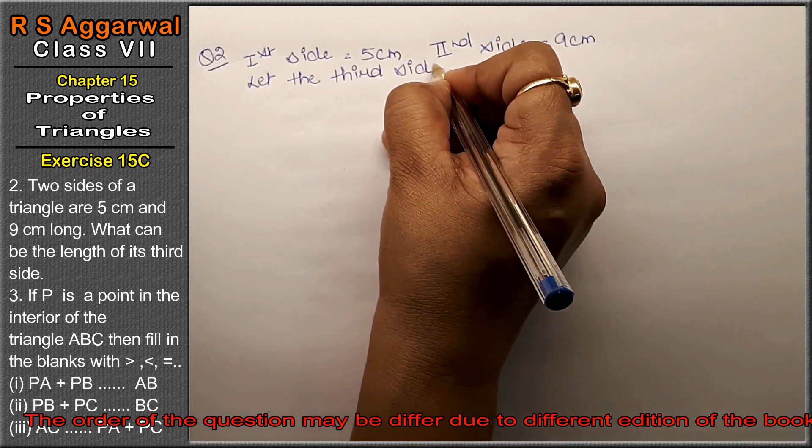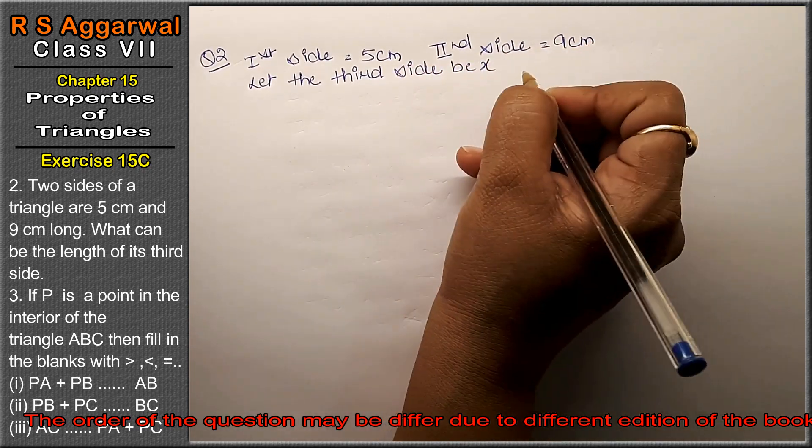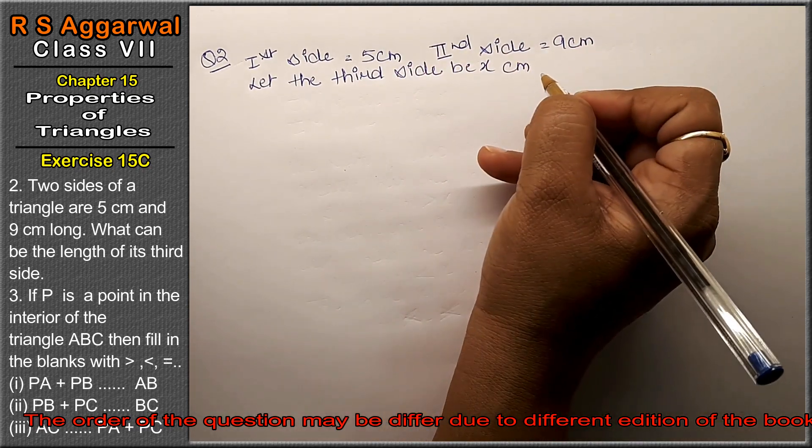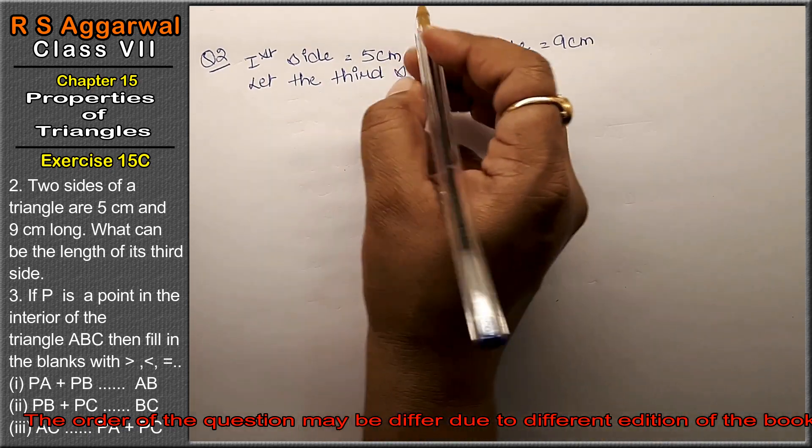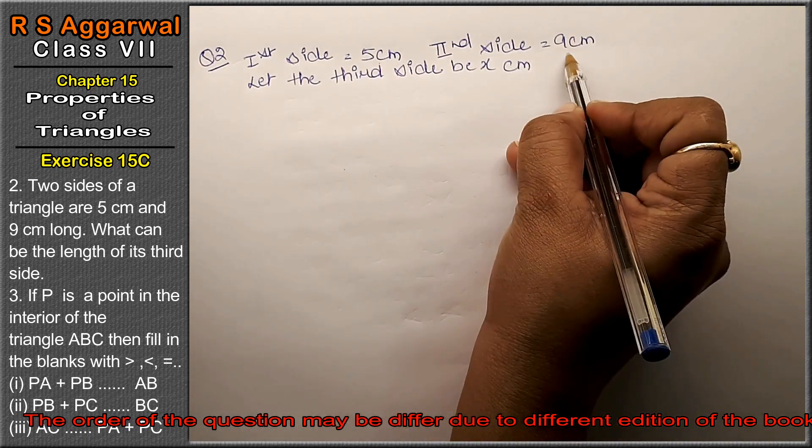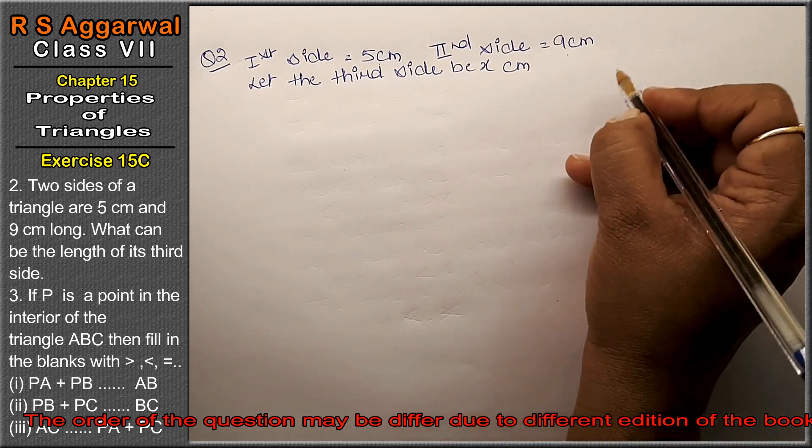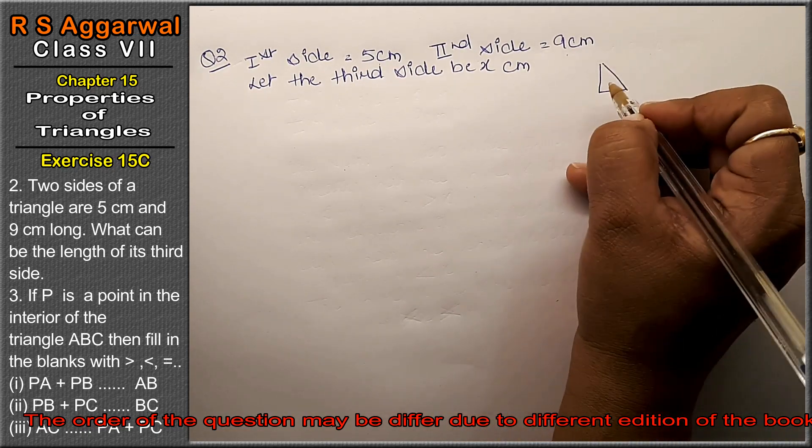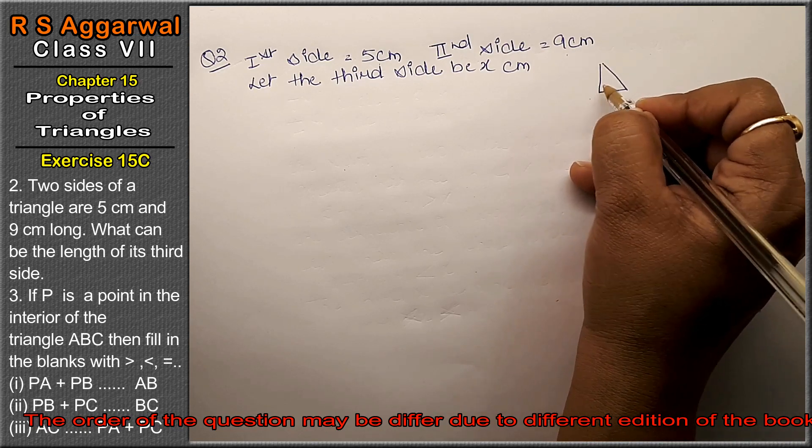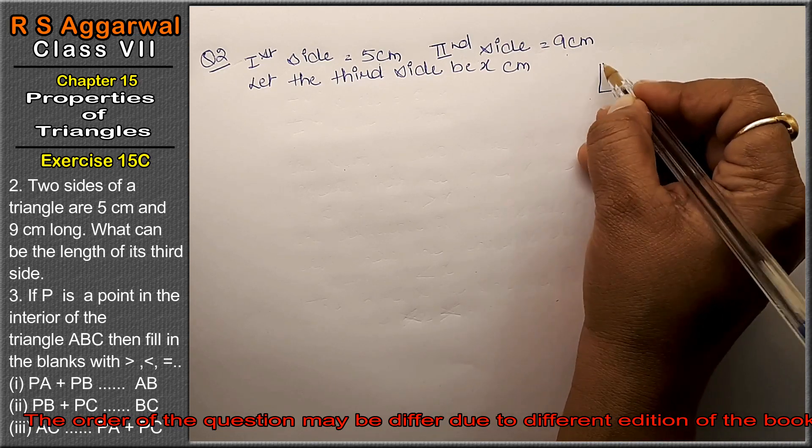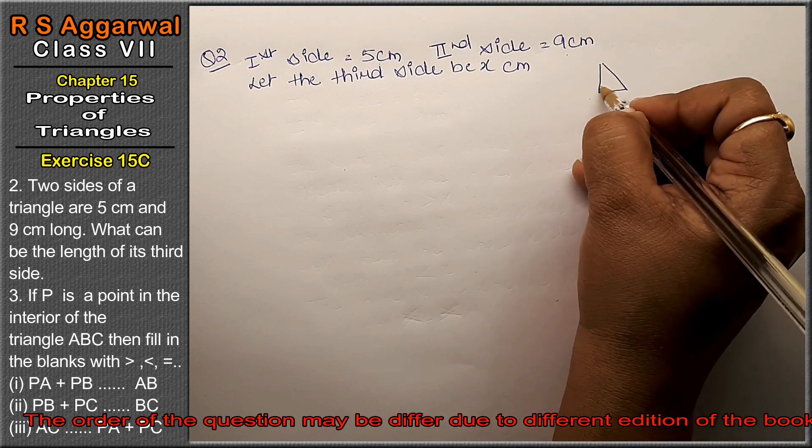Now, even though we have two sides, we cannot use Pythagoras theorem because it is not given that this is a right-angle triangle. Pythagoras theorem is applicable only in right-angle triangles where one angle is 90 degrees, but here we have no such information.